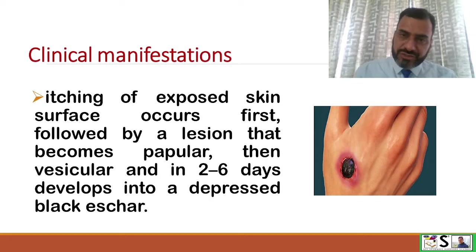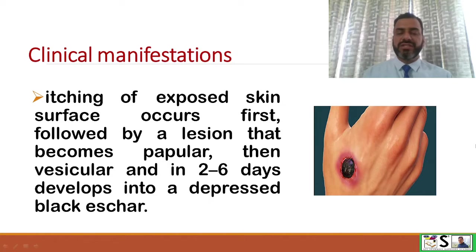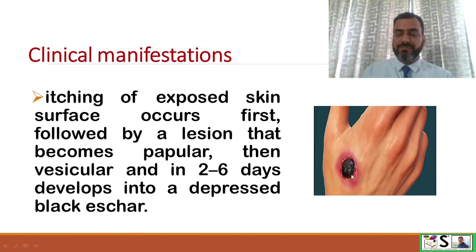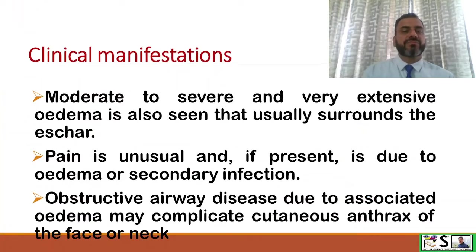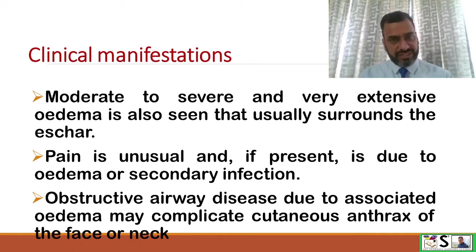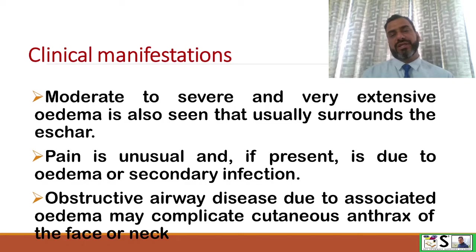What are the clinical manifestations of anthrax? Itching of the exposed skin surface occurs first, followed by lesion formation that initially becomes papular, then vesicular, and after 2–6 days there will be a depressed black scar formation. Moderate to severe and very extensive edema is also seen, usually surrounding the scar. Pain is unusual, and if present it is due to edema and secondary infection. Obstructive airway disease due to associated edema may complicate cutaneous anthrax of the face and neck.